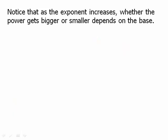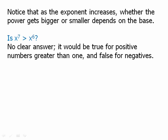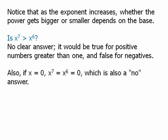Notice that as the exponent increases, whether the power gets bigger or smaller depends on the base. So if we ask: is x to the 7th greater than x to the 6th? There's no clear answer in general. It would be true for positive numbers greater than 1, and false for negatives. Also, if x equals 0, x to the 7th would equal x to the 6th, which would be 0 — so that's also a no answer.